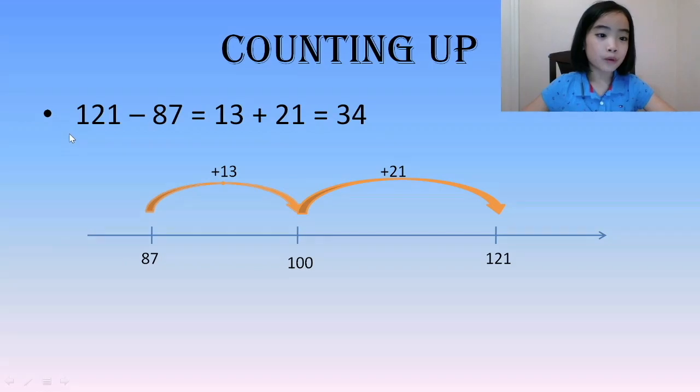The second strategy is counting up. For example, 121 minus 87. To find the difference between 121 and 87, we need to figure out how much bigger 121 is than 87. So, starting from 87, we do counting up.